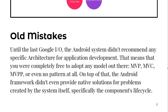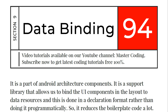What were the old mistakes? Until the last Google I/O, the Android system did not recommend any specific architecture for application development. That means developers were completely free to adopt any model — MVP, MVC, MVVM, or even no pattern at all. On top of that, the Android framework did not provide native solutions for problems created by the system itself, specifically the component lifecycle.